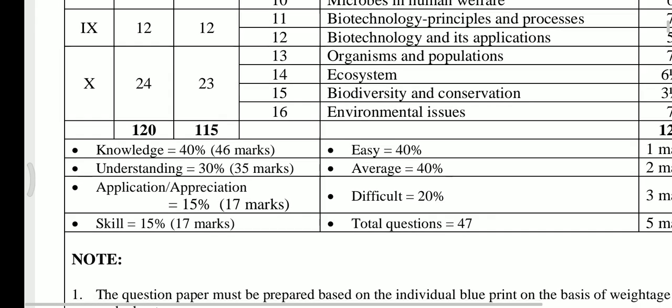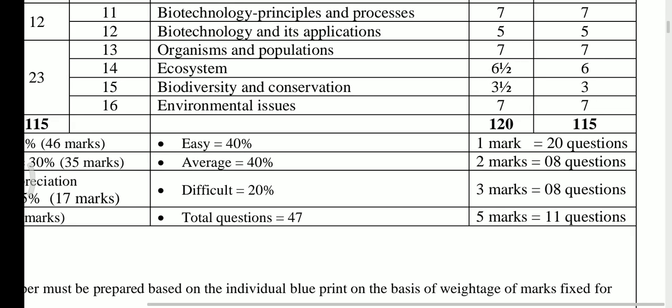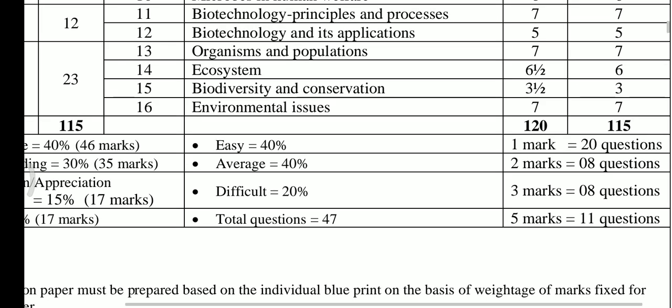The last unit, Unit 10, is for 23 marks. Chapter 13, Organisms and Population, is for 7 marks; Ecosystem is for 6 marks; Biodiversity and Conservation is for 3 marks; and Environmental Issues is for 7 marks.